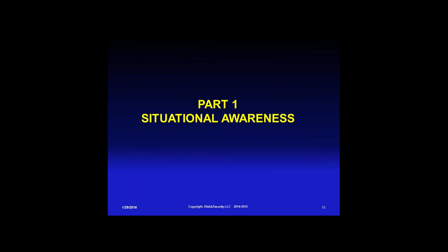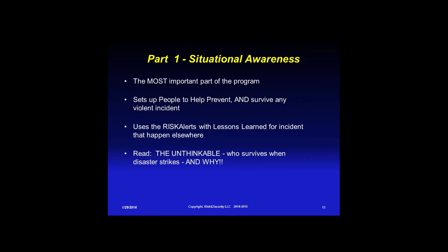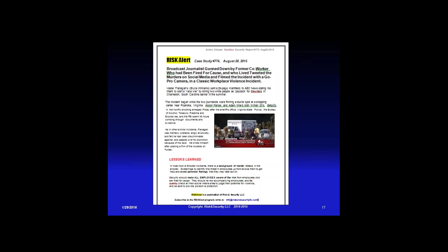The first part — situational awareness — is the most important part of the program. It helps people prevent and survive any violent incident using the risk alert program with lessons learned. They start reading it and when something happens they go, 'Oh yeah, this is just like the Planned Parenthood incident,' or 'just like what happened in Reno.' The book 'The Unthinkable' by Amanda Ripley covers all these different scenarios — it's a great read for anyone on this call.